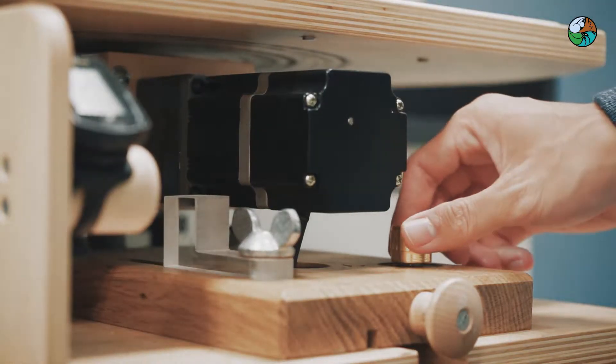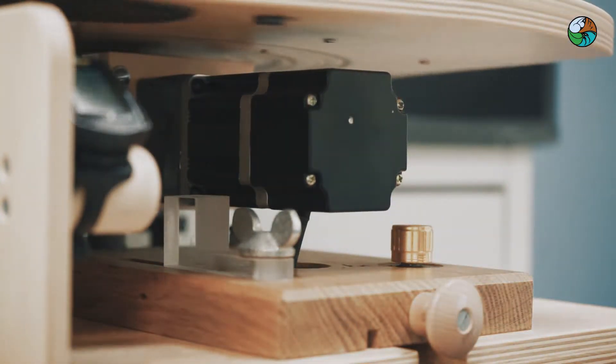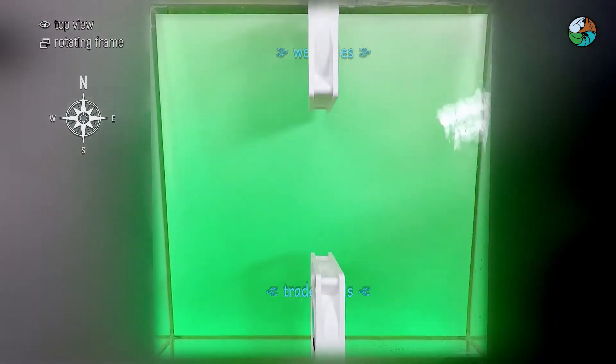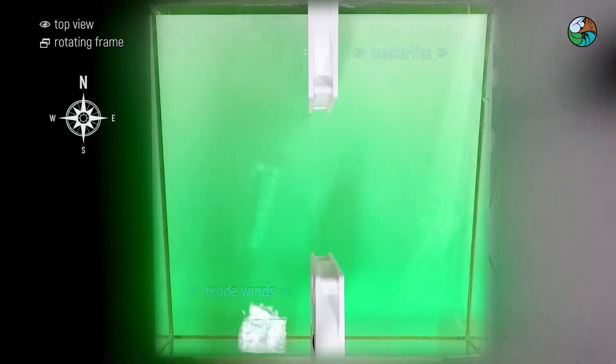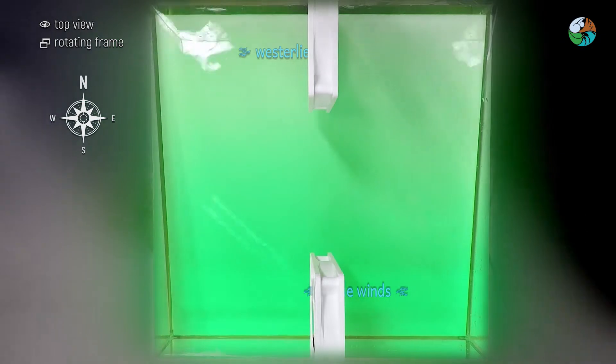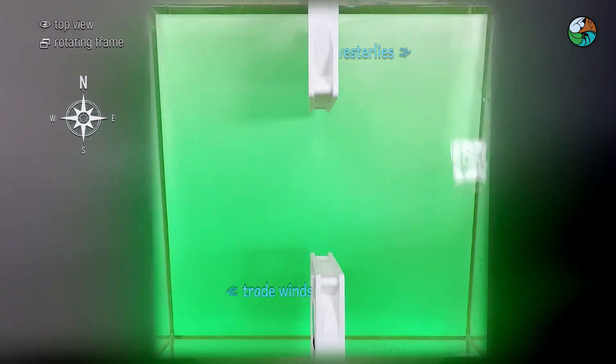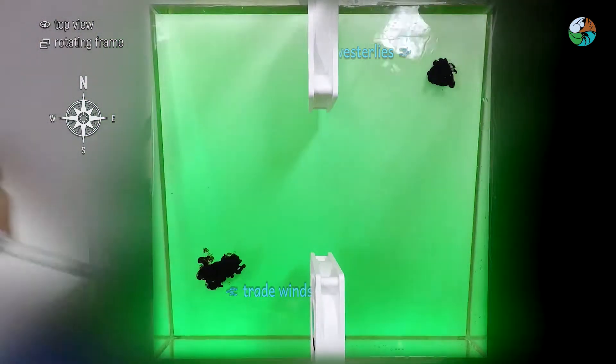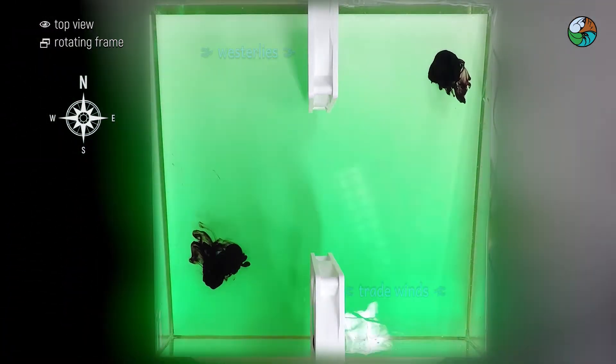Rotate the tank at a rate of 10 revolutions per minute. Wait long enough for the circulation to establish. I have added green dye to show the difference in water depth clearly. Drip dye at the north-east corner and the south-west corner at the same time. Observe their flow.